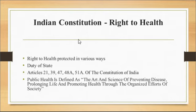Article 39 Clause B talks about a distributive economic system. It means that the aim is to use material resources in such a manner that the common good is served. A socialistic state can be achieved when proper health facilities are provided to each and every individual living in society. No one should be denied of this right.